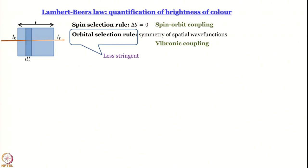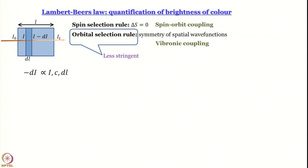To find the relationship between I₀ and I_t, Lambert and Beer separately considered a thickness dL in the sample in the direction of propagation of light. The intensity impinging on this small element is I and the intensity emerging from it is I minus dI — meaning this narrow strip caused a decrease in intensity by dI. Lambert and Beer figured out that minus dI is proportional to three things: the intensity I impinging on that element, the concentration C of the sample, and the thickness dL.